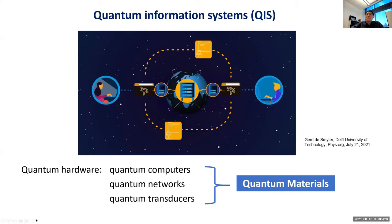You probably know quite a lot about quantum computers and quantum networks. Quantum transducers, in an ideal case, pass quantum information seamlessly in space, working with different modalities. At the heart of all this quantum hardware are quantum materials — that's what makes it all happen.